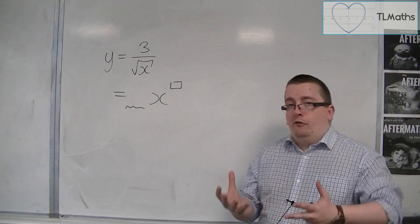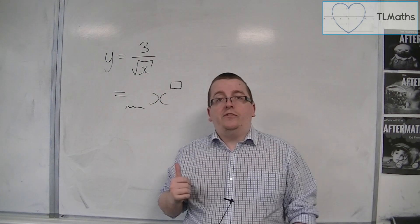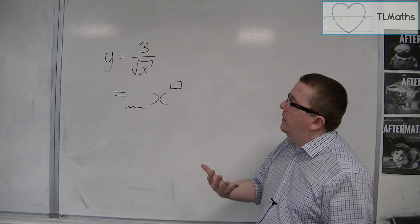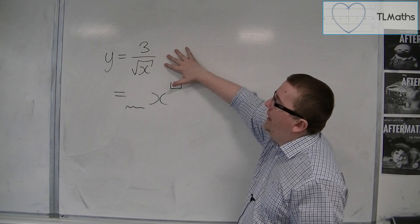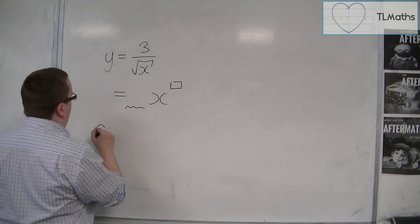But unless it's in that format, I cannot differentiate this as it stands. So I need to know how the indices work that can get me from that line to that line in order for me to then get to this line.